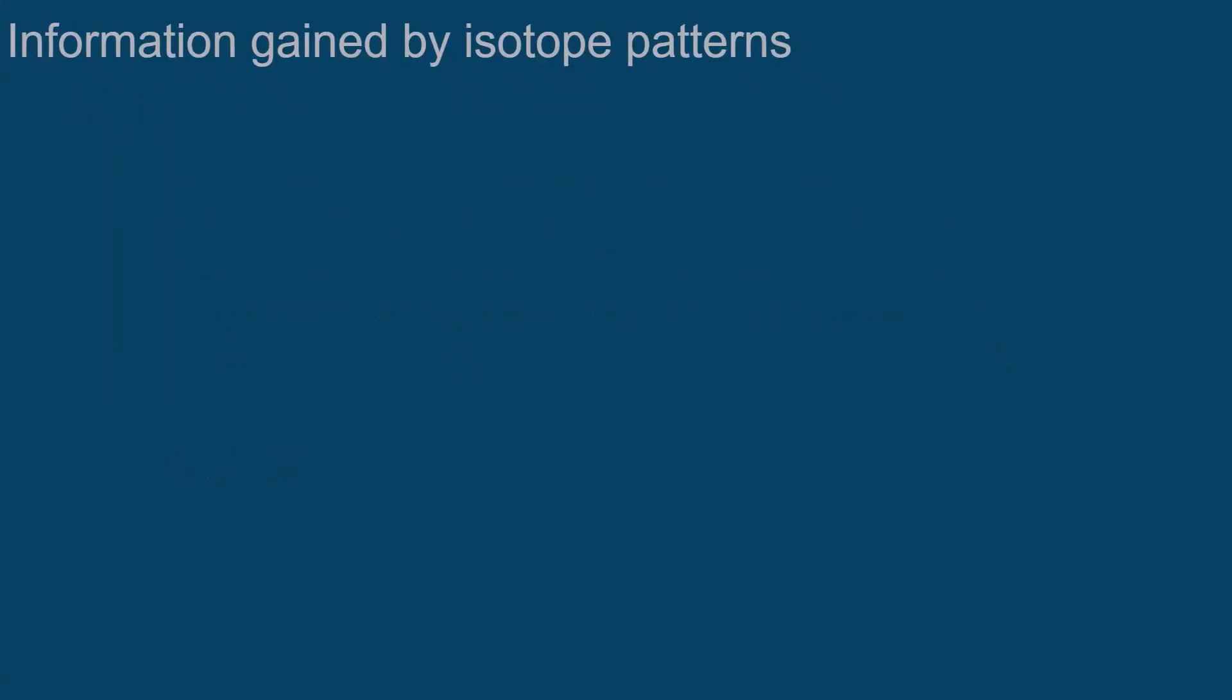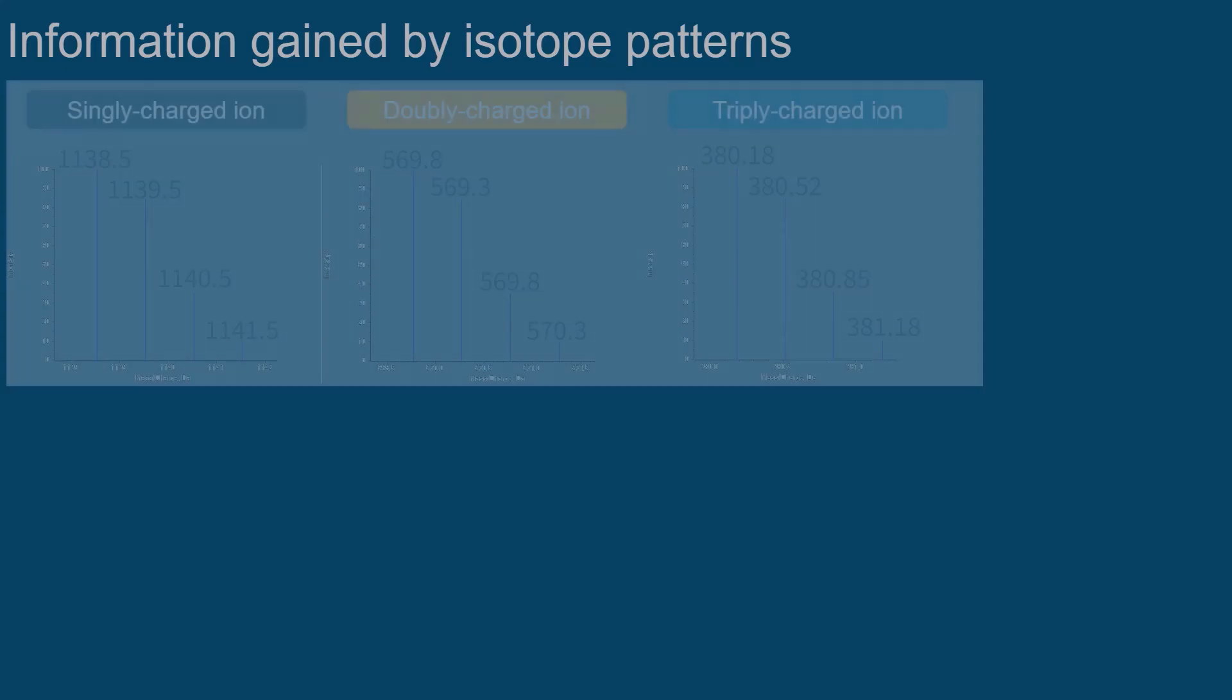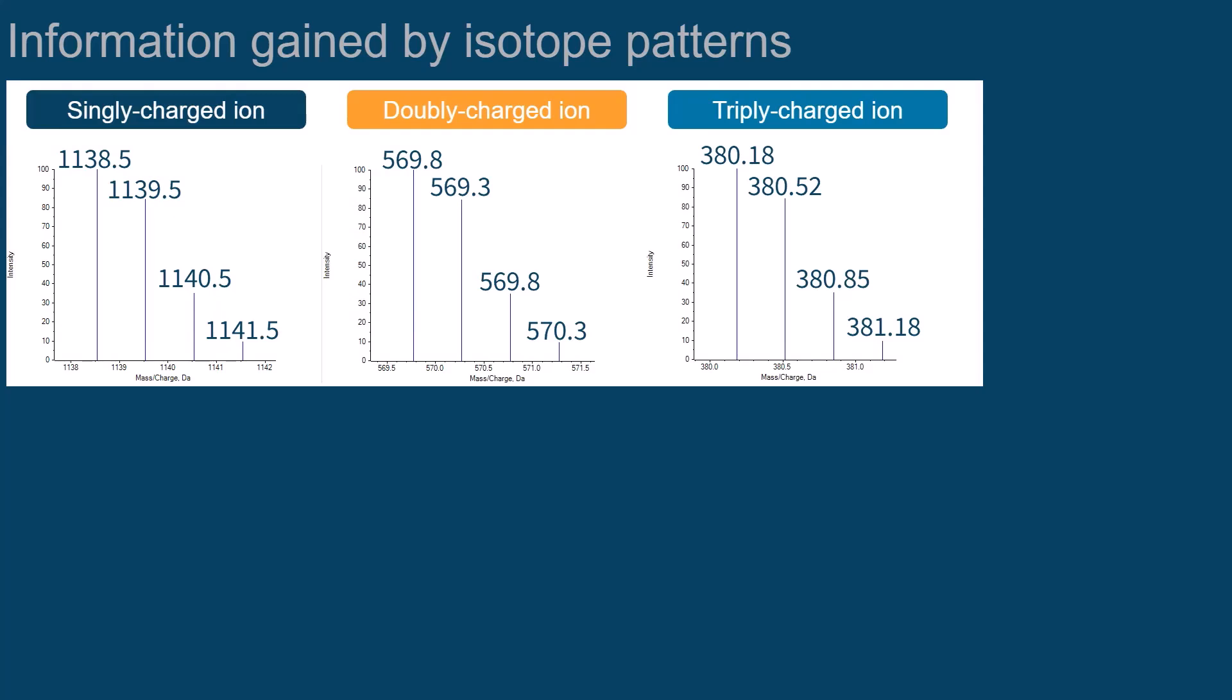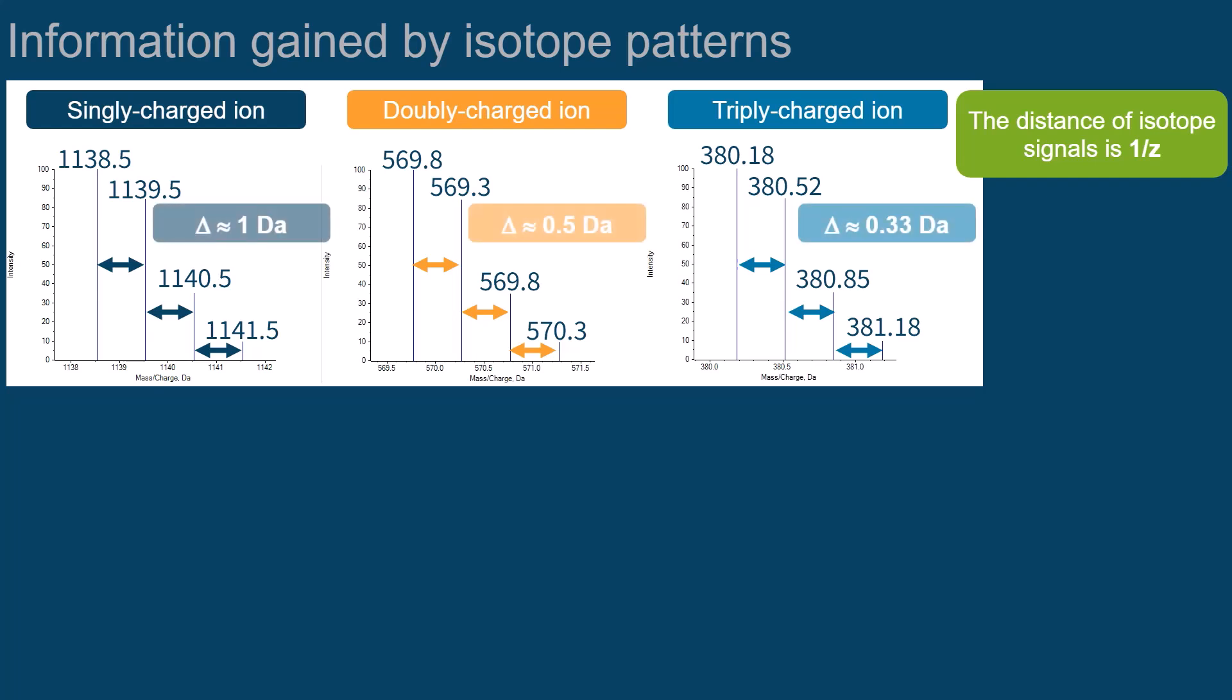You can get valuable information from the isotope pattern of a signal. For example, you can see which charge state the analyte has when reviewing the distances of signals within its isotope pattern. The distance between the signals is approximately 1 over Z. That is, for singly-charged ions, the distance is about 1 Dalton, and for doubly-charged ions, 0.5 Dalton.